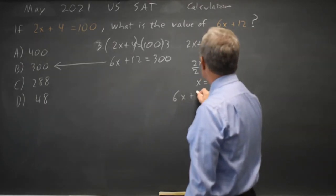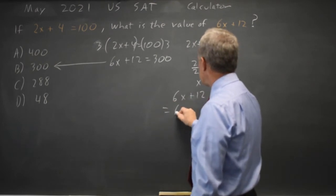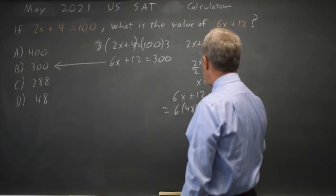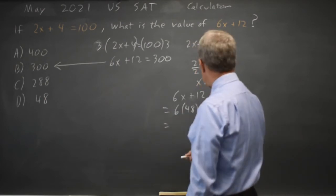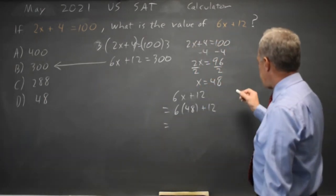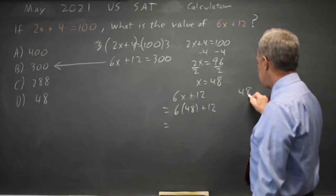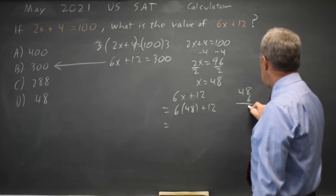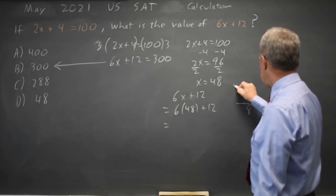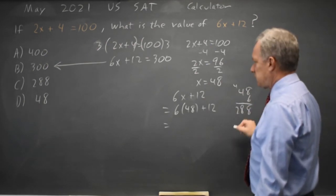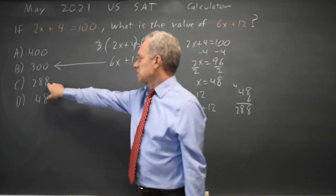6x plus 12 is equal to 6 times 48 plus 12. This is a calculator section but I don't have my calculator with me. So 48 times 6 is 288, and that's one of our answer choices also.